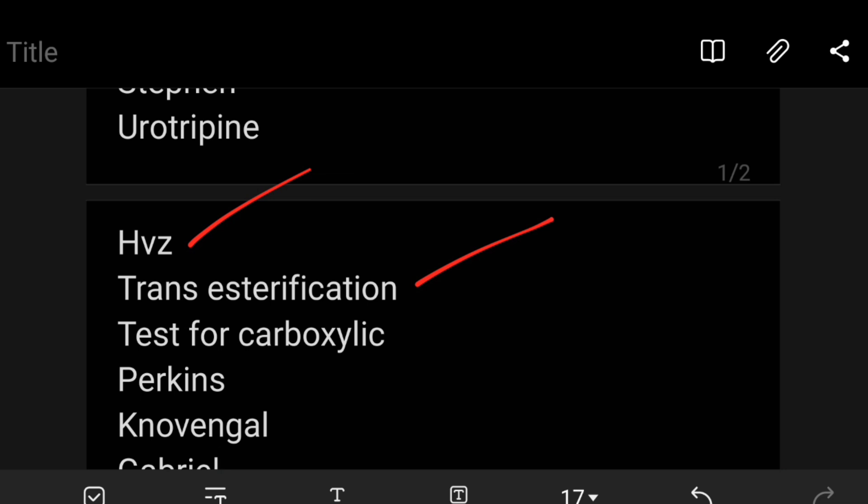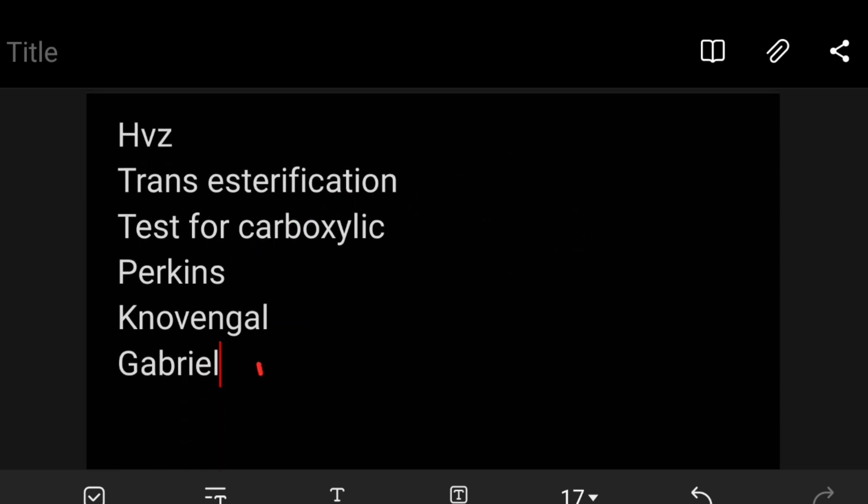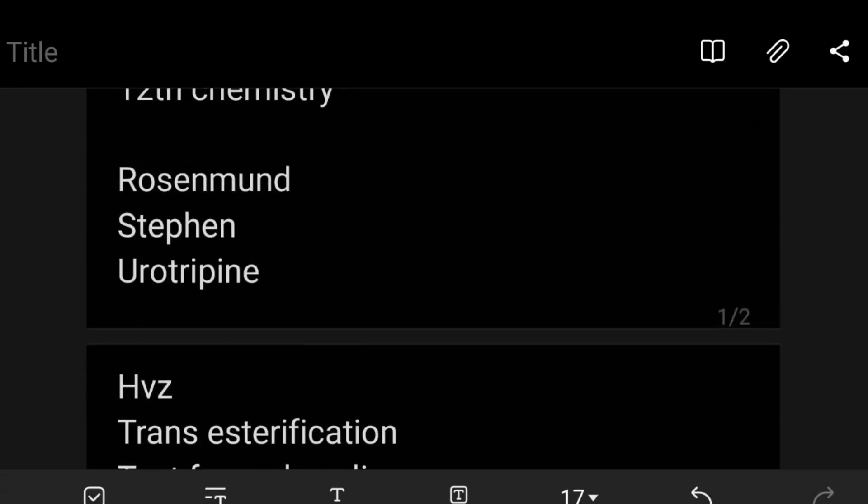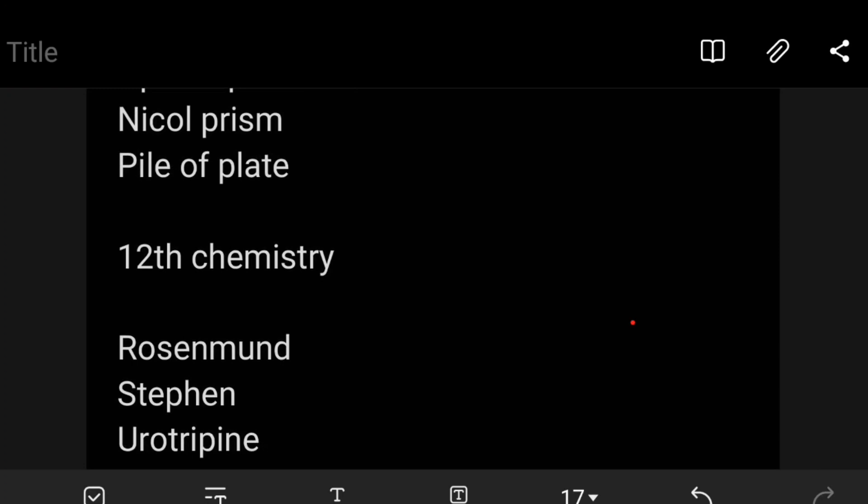Very important 2 mark: test for carboxylic acid. Perkins reaction is 2-5 marks. Gabriel phthalimide is an important question - nitrogen compound, 13th lesson. This is lesson 12 - Gabriel phthalimide. Chemistry has 9 reactions.